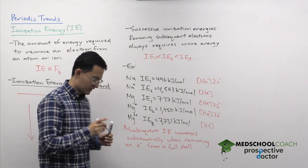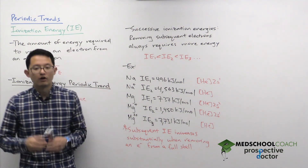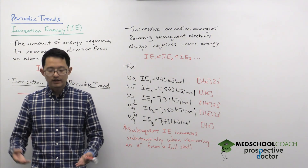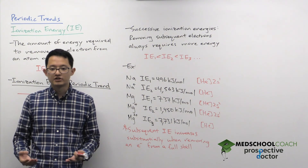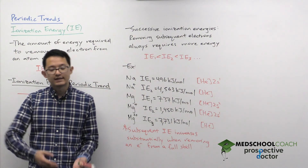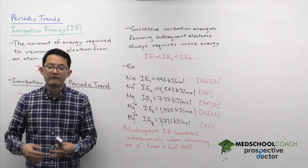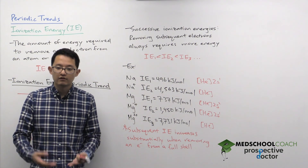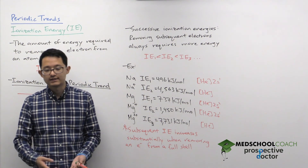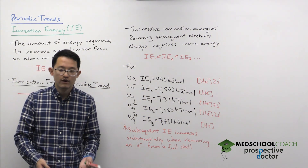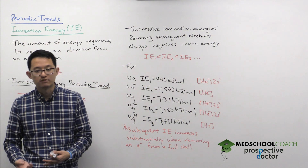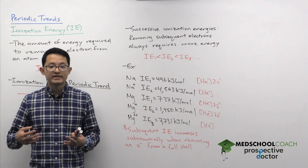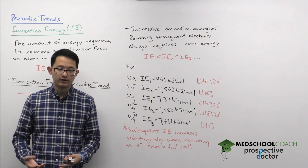This allows you to make predictions across the periodic table. For Group 1 alkali metals, the first ionization energy has some value, but the second ionization energy will show a large jump. For Group 2 alkaline earth metals, the first and second ionization energies are relatively close, but the third ionization energy will be substantially larger, since that's when you're removing an electron from a full shell.